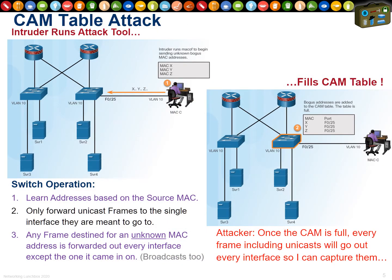Switches have rules. They learn based on the source MAC address, and when they know who you are, they will only send that frame to that one person. But if a switch has a frame and it does not know where the MAC address is meant to go, it must forward it out every single interface except the one it came in on — just like a broadcast, except it's a unicast.